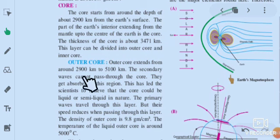The first detail is outer core. Outer core extends from around 2900 kilometers to 5100 kilometers. The secondary waves cannot pass through the core. In this region, this has led scientists to believe that the core could be liquid or semi-liquid in nature. The primary waves travel through this layer, but their speed reduces when passing through this layer. The density of outer core is 9.8 grams per cubic meter. The temperature of the liquid outer core is around 5000 degrees Celsius.